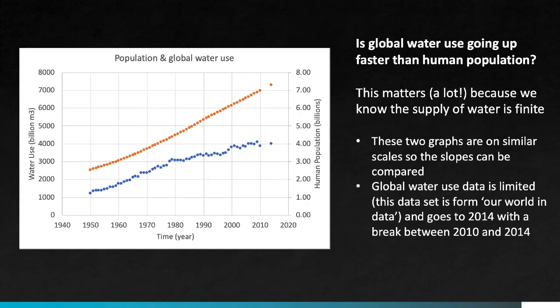We're going to start off by asking whether global water use is going up at a faster rate than the rate of growth in the human population. The answer to this question matters a lot because we know the supply of fresh water is finite on this planet.